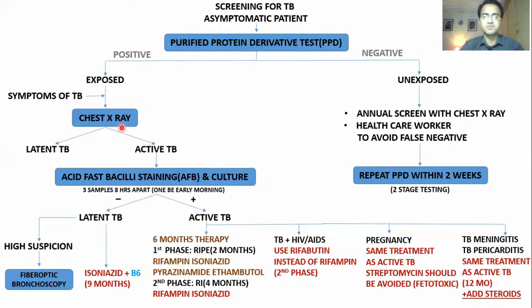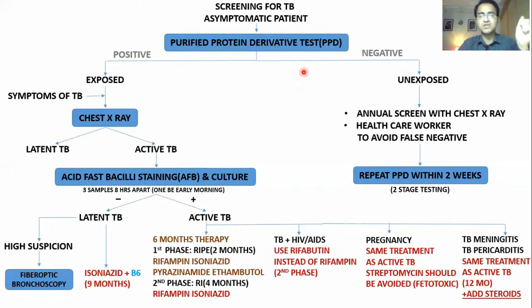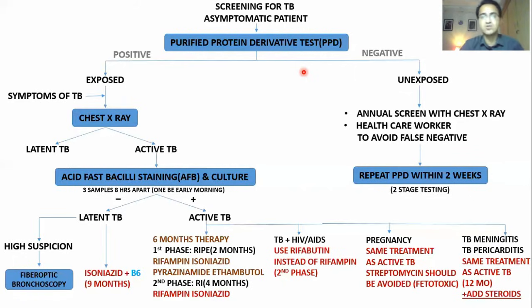In the PPD test, you wait 48 to 72 hours, measure the induration, and classify patients into three groups: greater than 5 mm, greater than 10 mm, or greater than 15 mm, to determine whether the result is positive or negative.